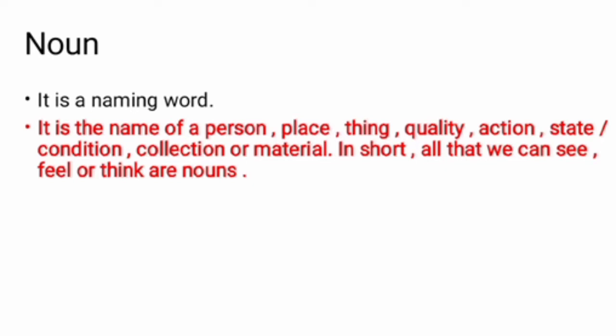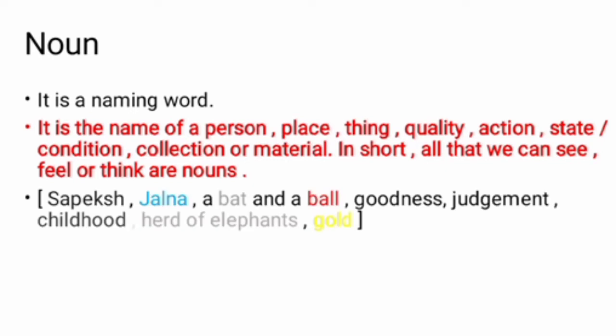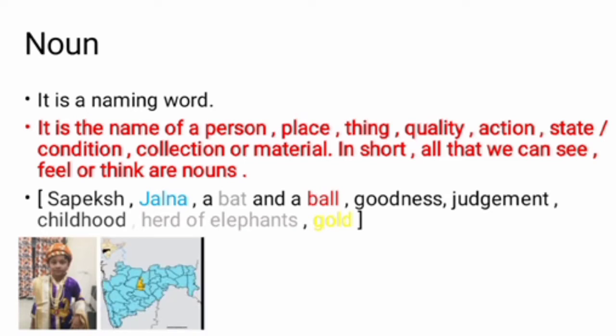See the examples. Sapeksh is the name of my son who played the role of Shivaji Maharaj last year. He is a good actor. Jalna is the name of a district in Maharashtra. Jalna is also the name of a city where I live. A bat and a ball, these two are essential to play cricket.